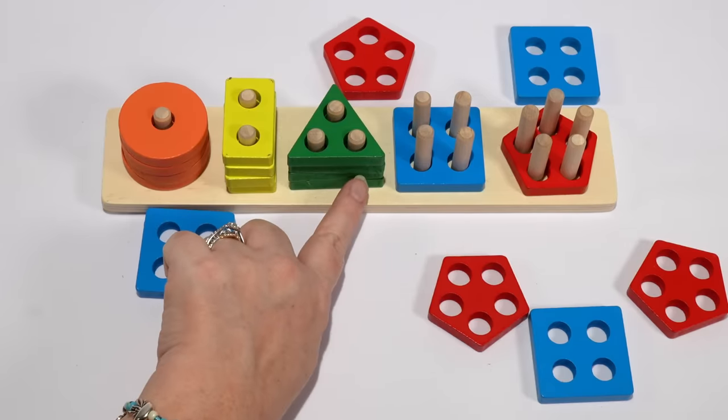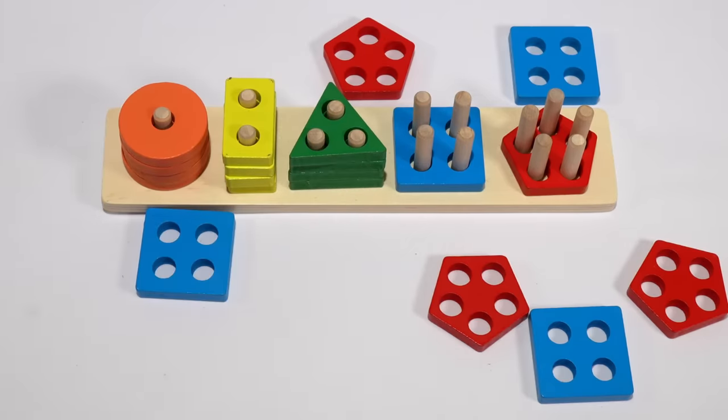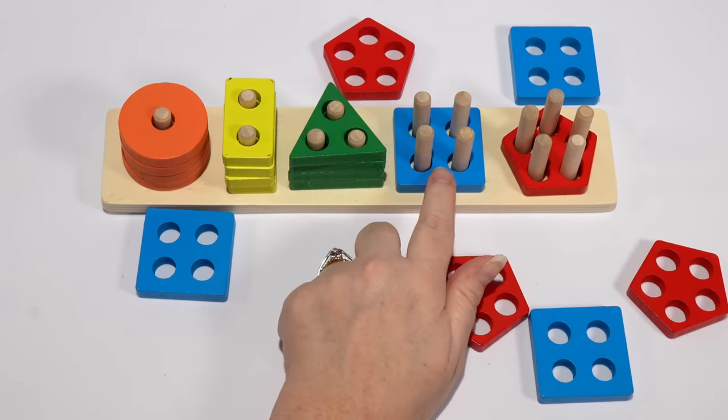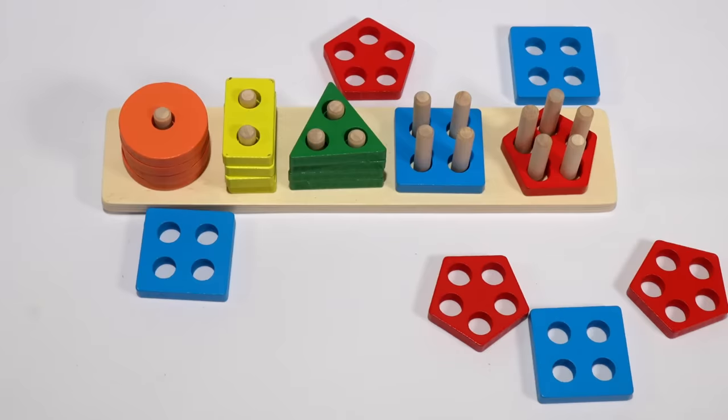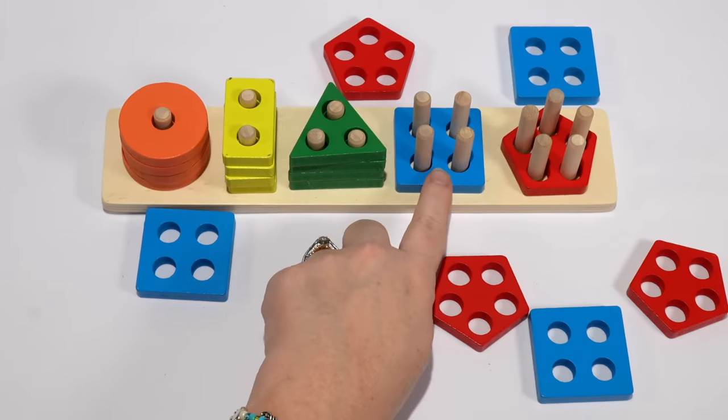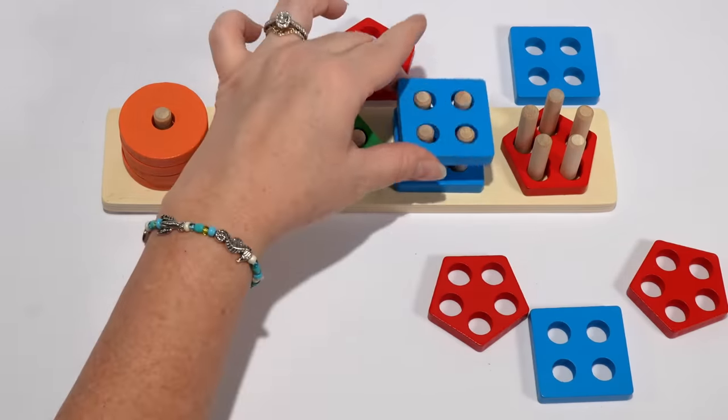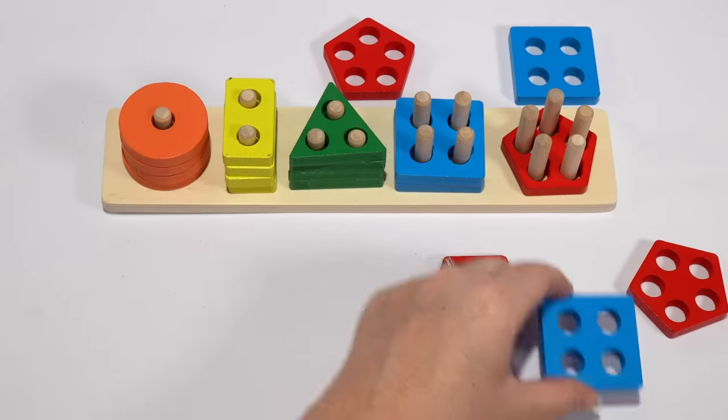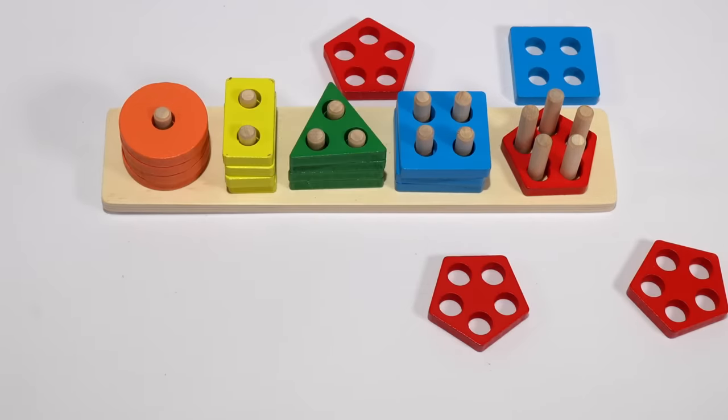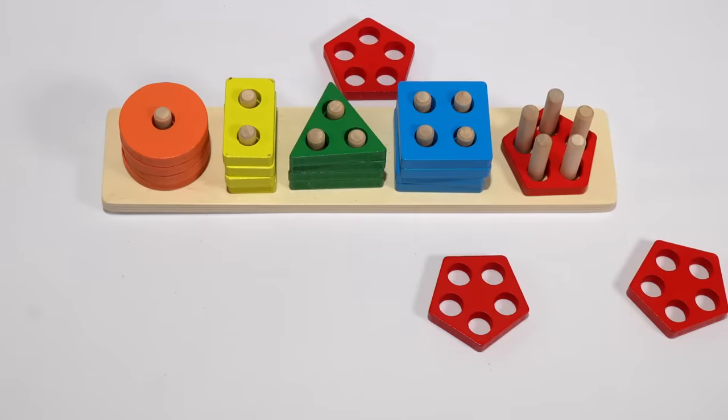One, two, three, four. Then we have square. And we have one, two, three, four squares.